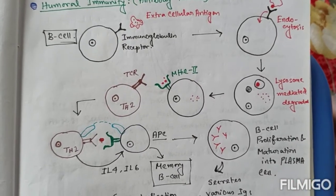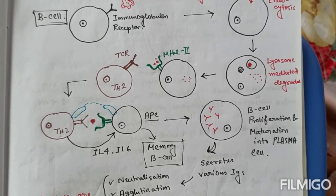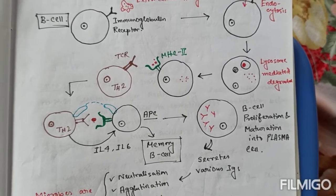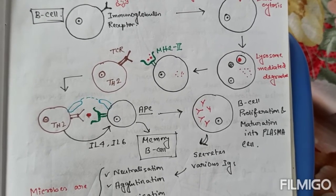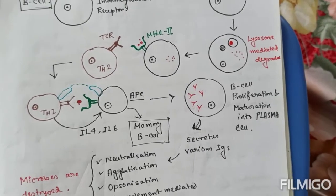So the basics of humoral immunity is antibody production from plasma cell which is the converted form of B-lymphocyte. And B-lymphocyte is activated from the naive form by the help of helper T-cells.